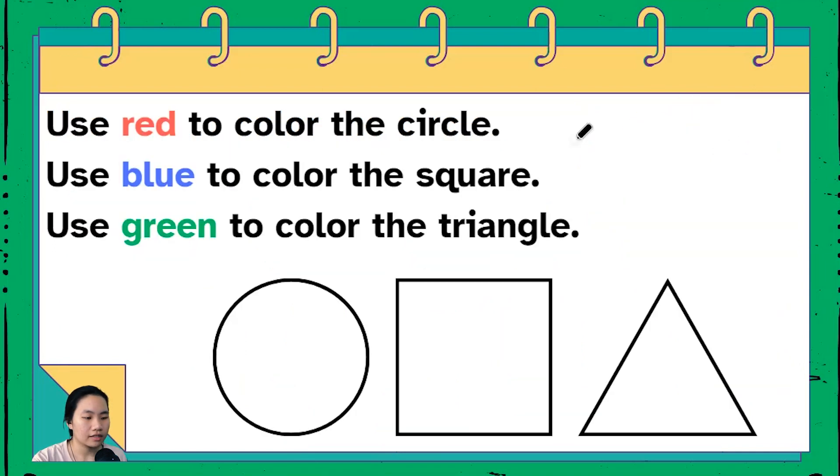For our next activity we're going to be coloring the shapes that we've learned in our last lesson. We have a circle, a square, and a triangle.